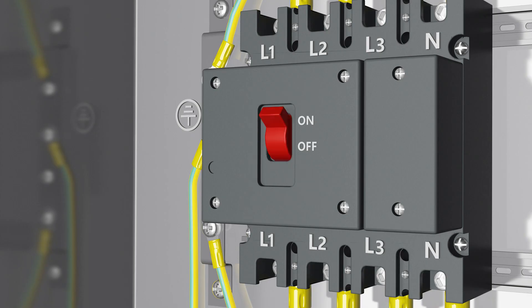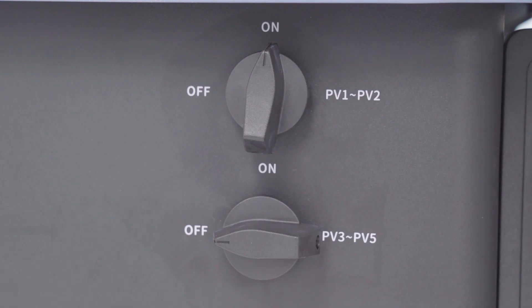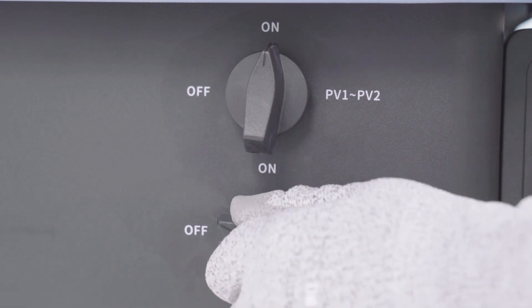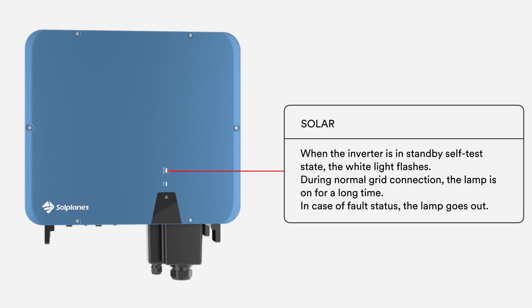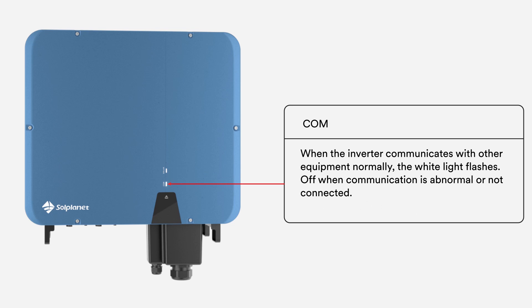Switch on the miniature circuit breaker and DC switch. The inverter is equipped with three LED indicators which provide information about the various operating states as follows.